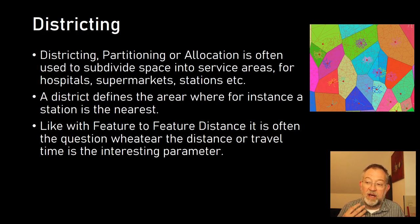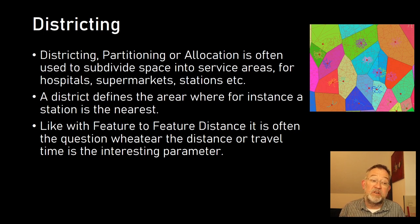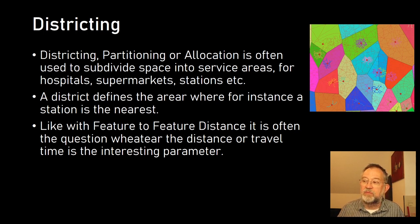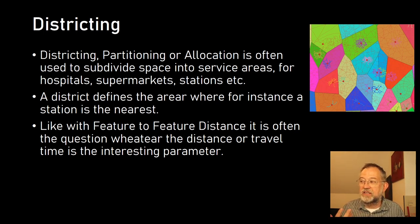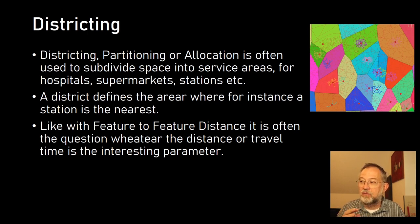Districting also raises the question: is it measured in meters — i.e., which is closest — or is it in travel time? In this example, I have a districting in meters around the capitals in Europe, but I also show a travel time network of one hour by train — two different approaches to working with districting.